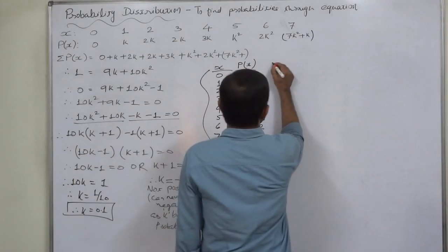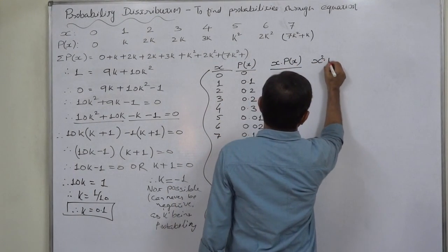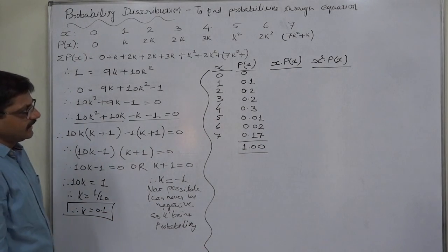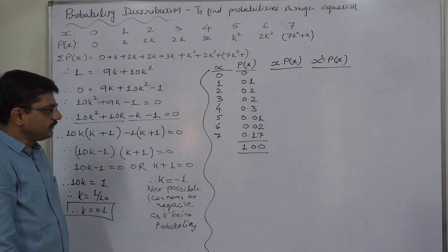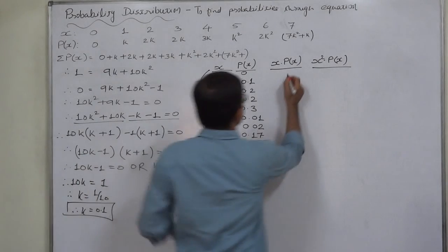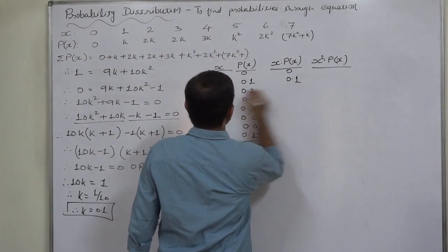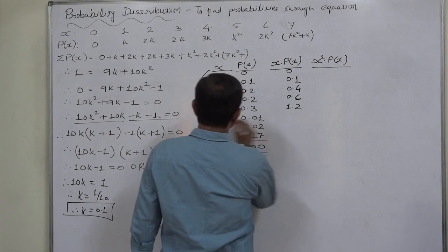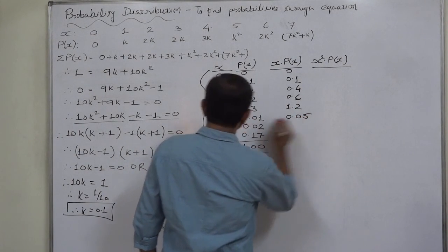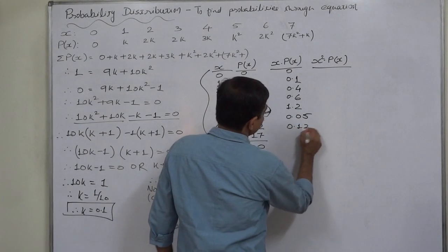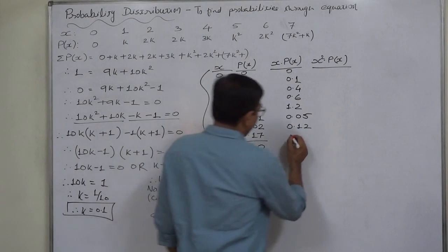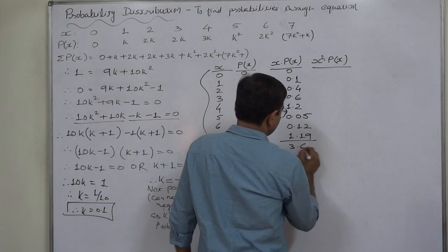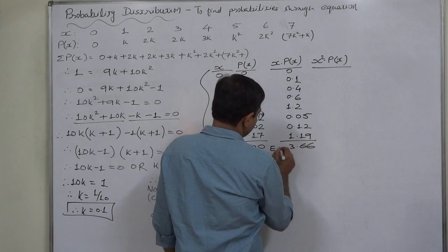Now we compute the columns X times P(X) and X squared times P(X) to arrive at E(X squared), and then we can calculate variance and standard deviation. For X times P(X): 0×0=0; 1×0.1=0.1; 2×0.2=0.4; 3×0.2=0.6; 4×0.3=1.2; 5×0.01=0.05; 6×0.02=0.12; 7×0.17=1.19. The summation comes to 3.66, which is E(X).